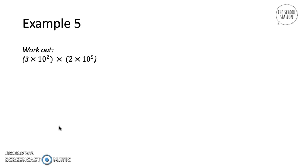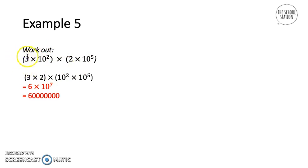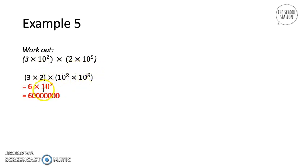Example five: work out (3 times 10 squared) times (2 times 10 to the power of 5). We group like terms: 3 times 2, and 10 squared times 10 to the power of 5. So we get 3 times 2 in brackets times 10 squared times 10 to the power of 5. Simplifying: 3 times 2 is 6, and adding the powers gives 10 to the power of 7, so the answer is 6 times 10 to the power of 7.